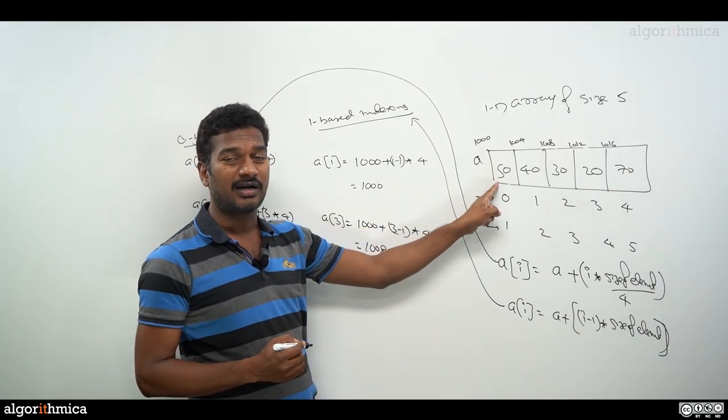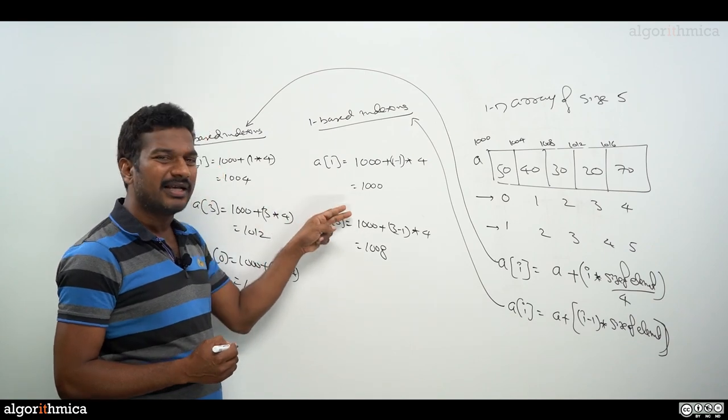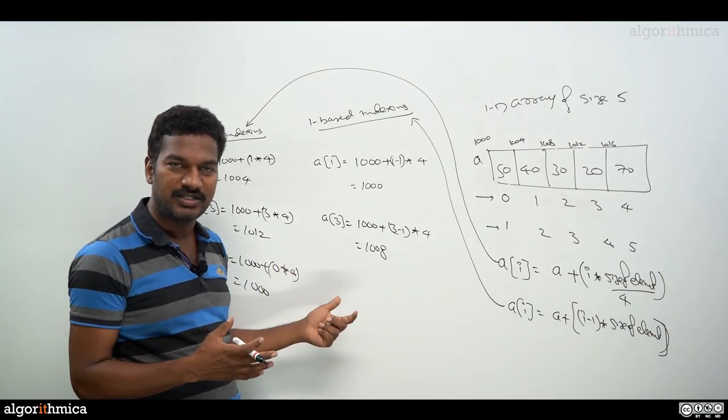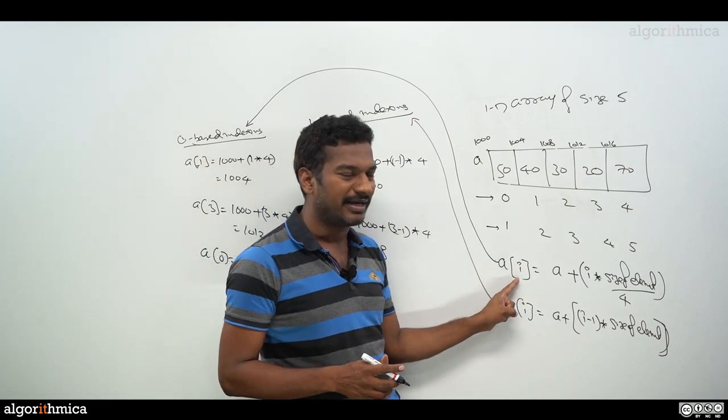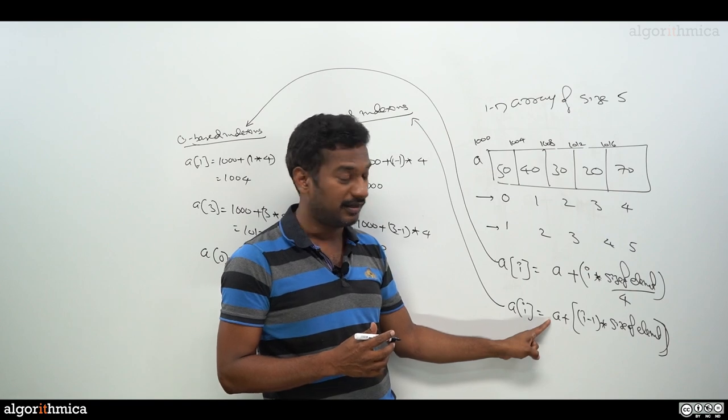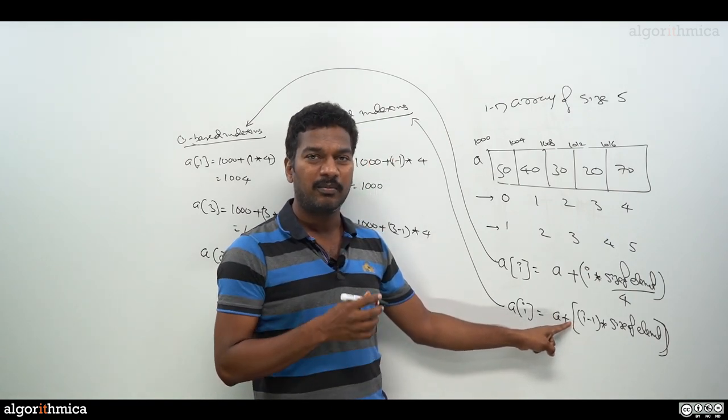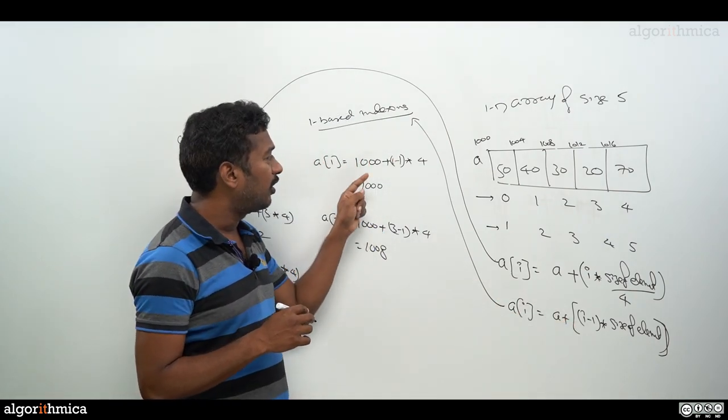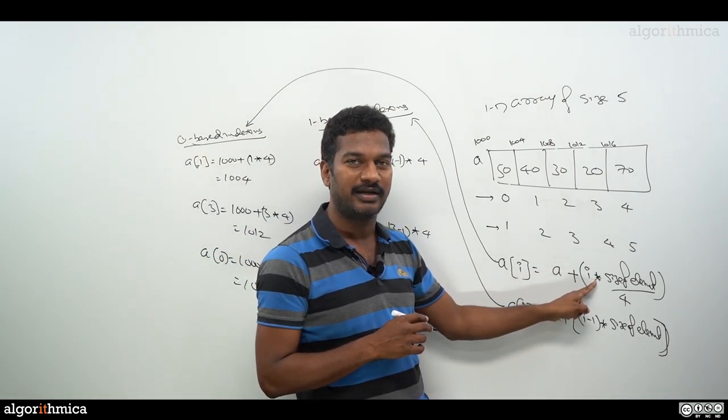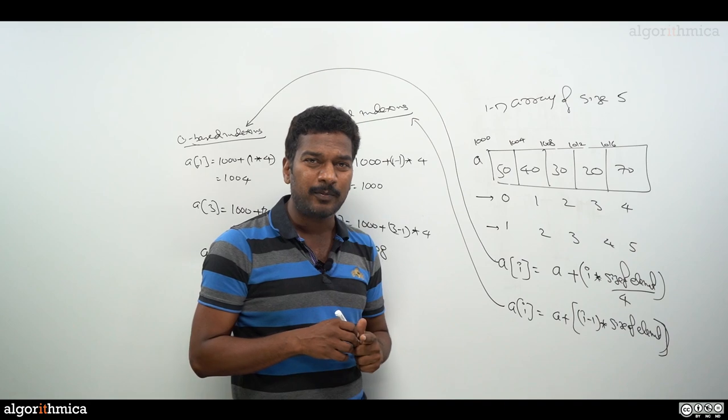In both cases, we are able to get exact addresses. But if you look at the expressions, the compiler generates for zero-based indexing this expression, which is working. For one-based indexing, this is the expression. But while doing the calculation, we have to do this extra subtraction operation which is not required in zero-based indexing. That's why all programming languages...